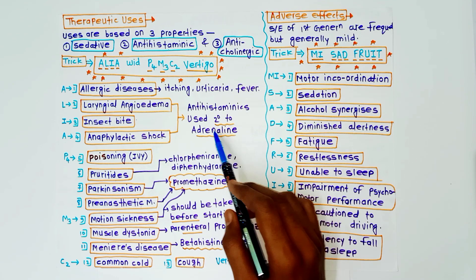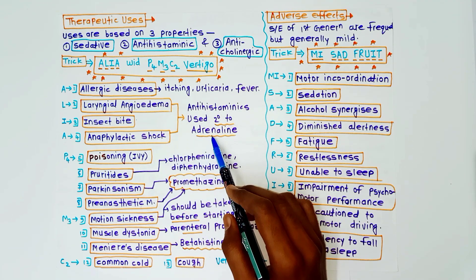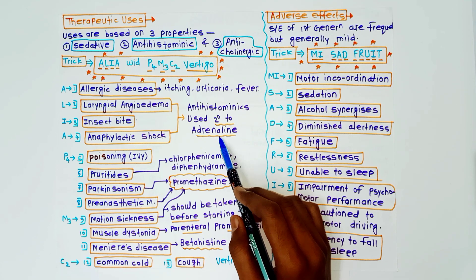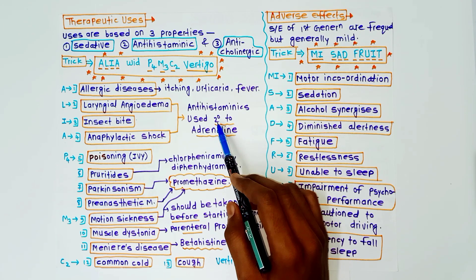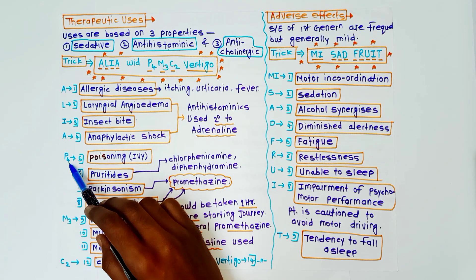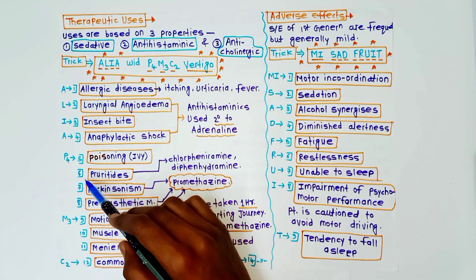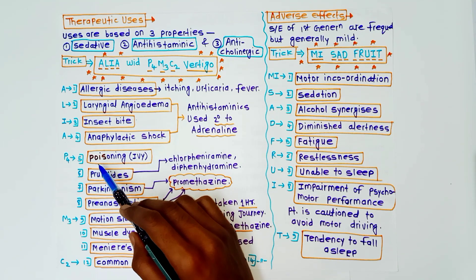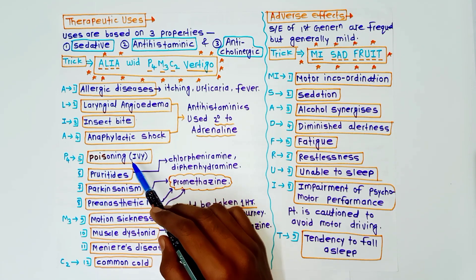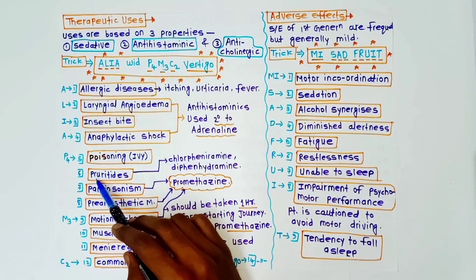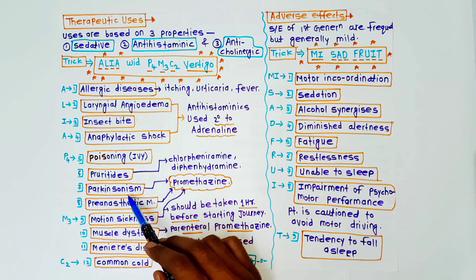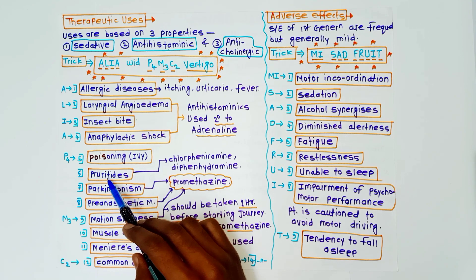P4, P4 means four uses starting with P. First of all poisoning IV, poisoning, pruritides, Parkinsonism, preanesthetic medication. So in case of pruritides, chlorpheniramine and diphenhydramine are used. And in case of preanesthetic medication and Parkinsonism, promethazine is used.